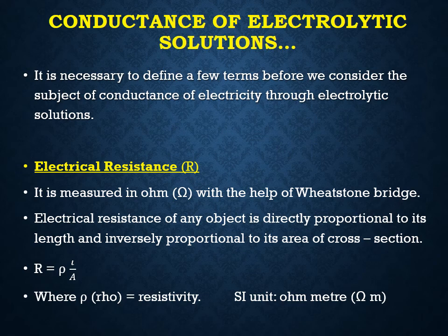The first important term is electrical resistance, R. It is measured in Ohm with the help of a Wheatstone bridge. Electrical resistance of any object is directly proportional to its length and inversely proportional to its area of cross-section. That is, R is directly proportional to L by A, or R is equal to rho times L by A. Here the constant rho is called resistivity. The SI unit of resistivity is Ohm meter.